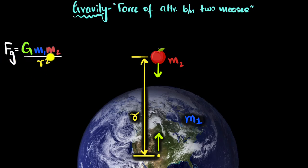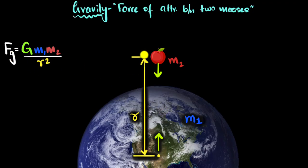Just by looking at this, we can see the force of gravity is directly related to the masses — exactly as what we thought. We also see the force of gravity is inversely related to the distance between them, again exactly as what we thought. But there's a square in the denominator — we'll come back to that.